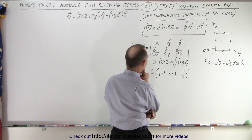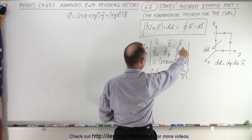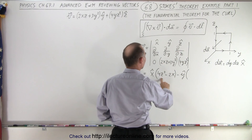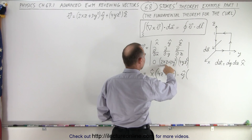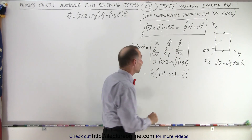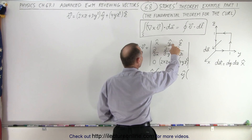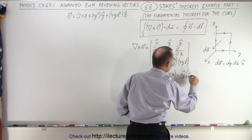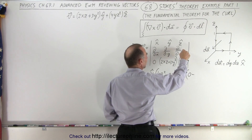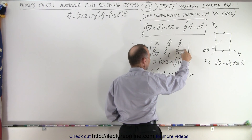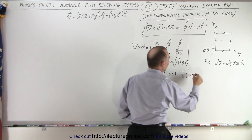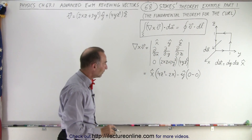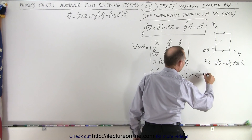We have the partial derivative of this — this is 4z squared — and the partial derivative with respect to z. So next we have minus the y unit vector times the partial derivative with respect to x of that quantity, which is going to be 0, minus the partial derivative with respect to z, which is also 0. So it looks like the y component is not there. Now we have plus the z component.